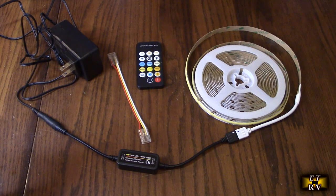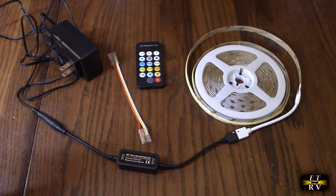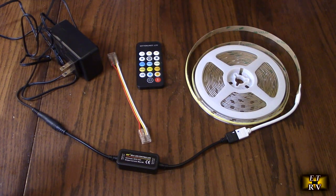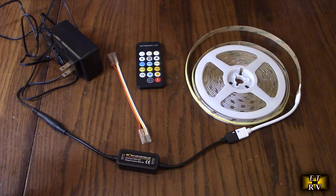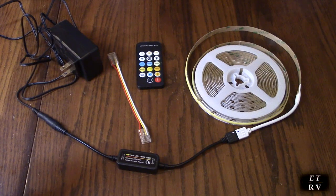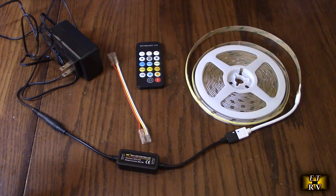It goes from 2700 Kelvin up to 6500 Kelvin. It's 16.4 feet, dimmable, ultra bright, and really flexible. It'll produce a combined total of 6000 lumens. It has a really good high CRI of 90 plus, and that's the quality of the light itself.